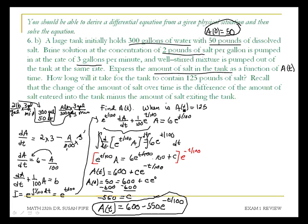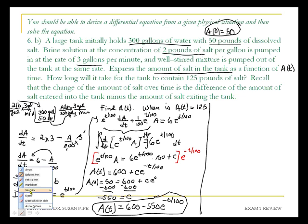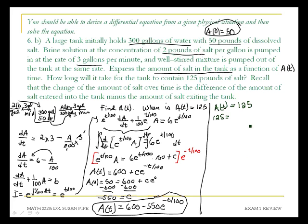Now I want to find how much time will pass before I have 125 pounds of salt in the tank. I want to find when A of T is equal to 125. That gives me 125 equals 600 minus 550e to the negative T over 100.